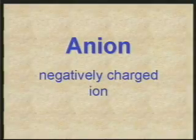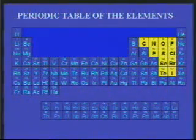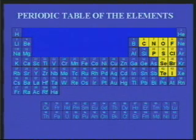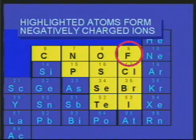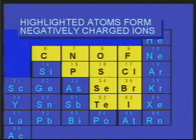In this experiment you will be concerned with the negatively charged anions. In general, on the periodic table, the elements on the right side tend to form ions that have a negative charge. These elements are highlighted on the periodic table for you to see. The halogens — fluorine, chlorine, bromine, iodine — should be familiar elements that tend to form negative ions.